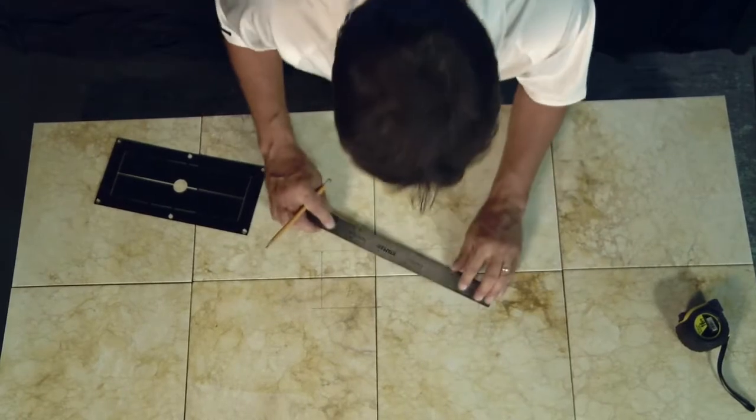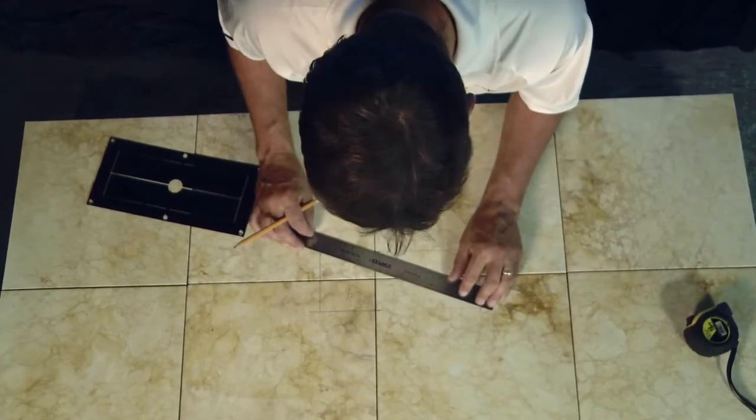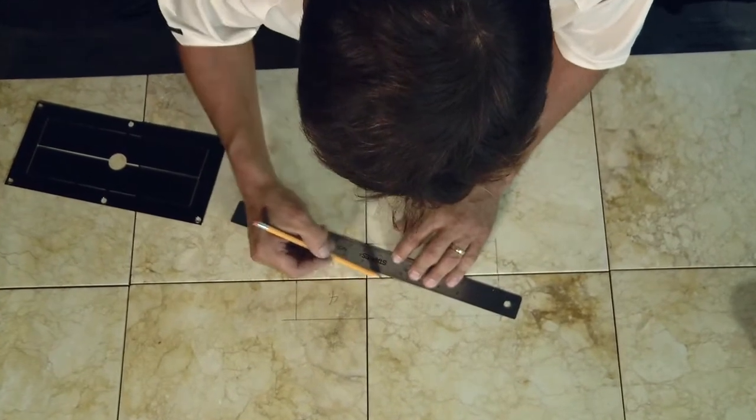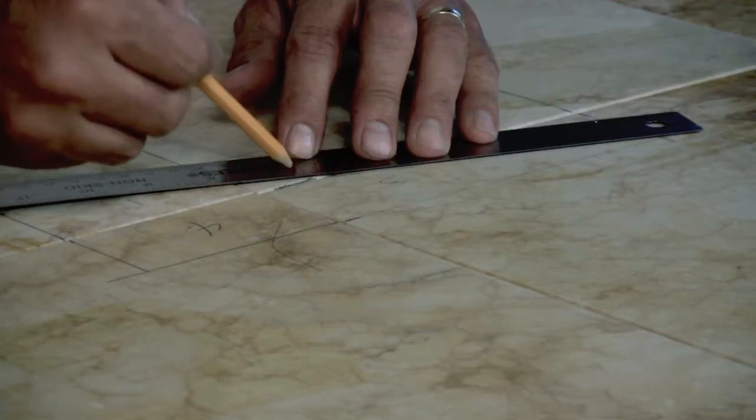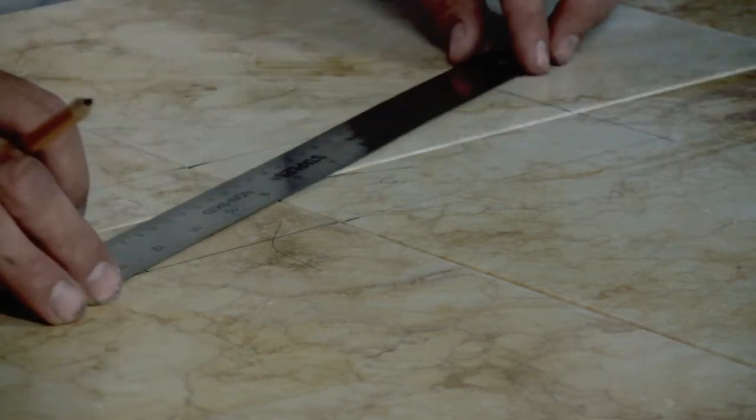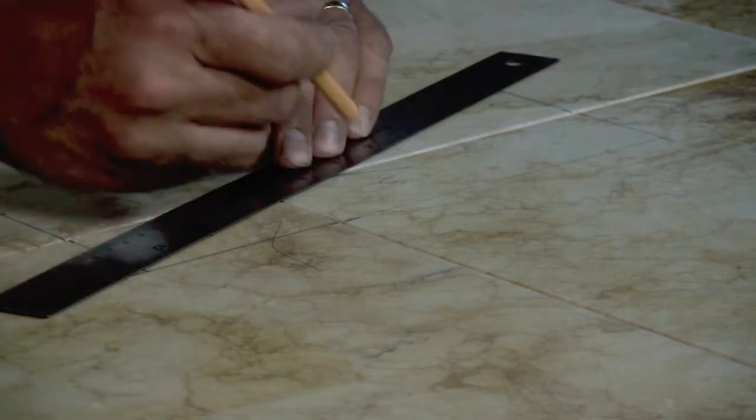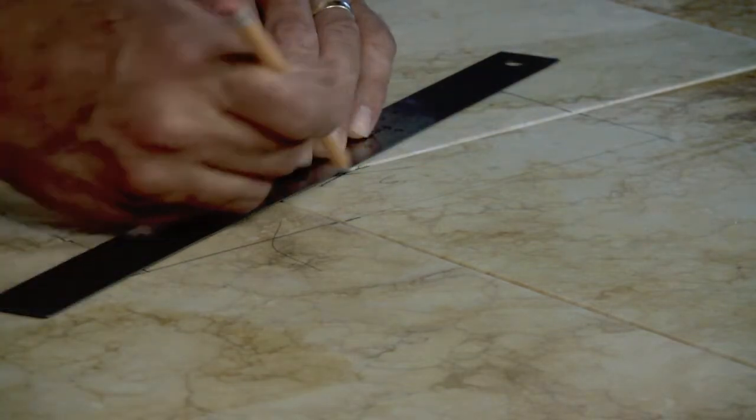Once you've laid out the opening of the vent, you locate the center of it by drawing a line from corner to corner. You can always put masking tape down if the tiles become intrusive or in the way or joints. This appears to be lining up good.